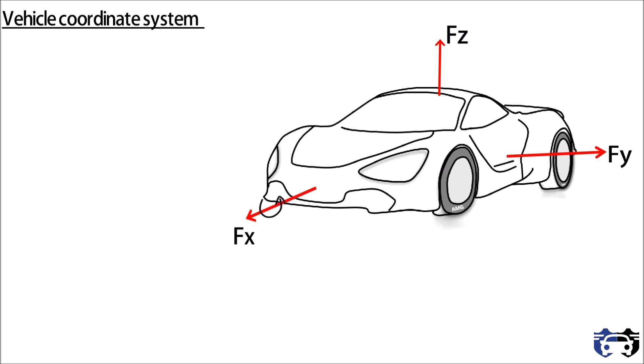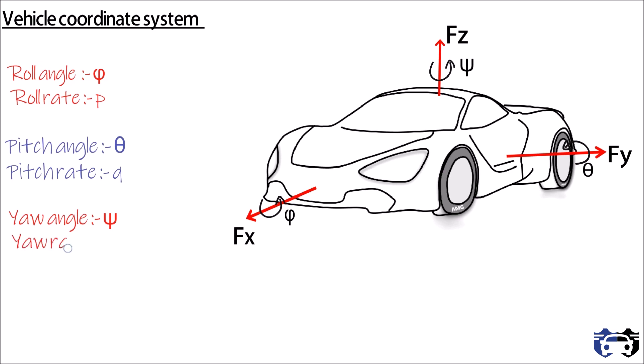When the vehicle rotates along the x-axis, it gives roll angle phi and angular velocity called roll rate p. Rotation along the y-axis gives angular orientation, that is pitch angle theta and pitch rate q. And rotation along the z-axis gives yaw angle psi and yaw rate r.